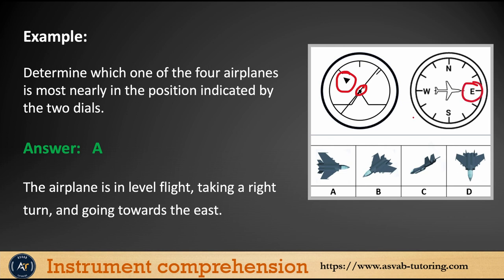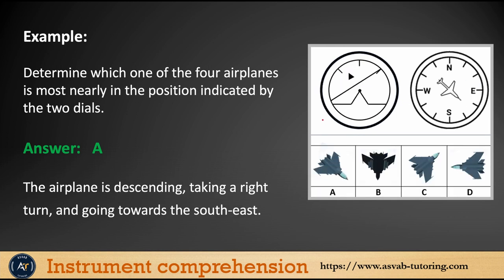Here the miniature aircraft is right below the horizon, which means the aircraft is descending. The index is on the left side of center, which means it is taking a right turn, and it is also going to the Southeast.